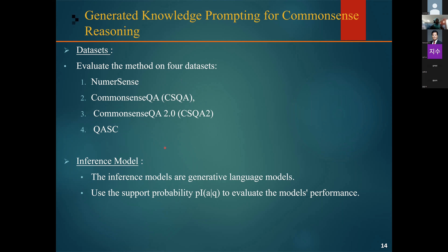CommonsenseQA 2 is a binary classification dataset to judge the true or false of a statement, so it has just two options. The Question Answering Science dataset is an eight-way question-answering dataset about science and background knowledge. The inference models used are generative and smaller models like T5, UnifiedQA, and Unicorn, which are all generative language models. The inference model calculates the probability of selecting a choice based on the score assigned by the generative language model, computed by summing the log probability of each token in the choice given the preceding tokens and the question.